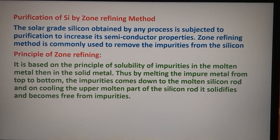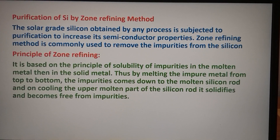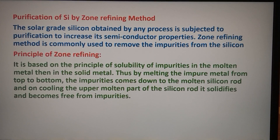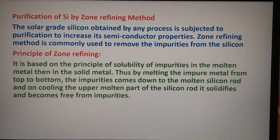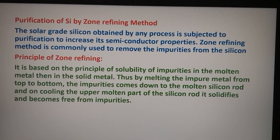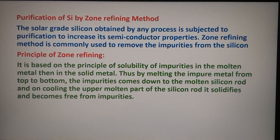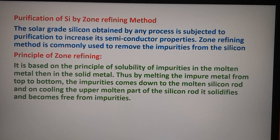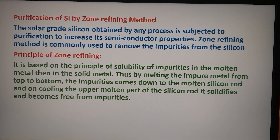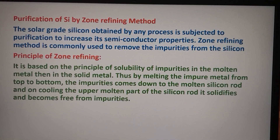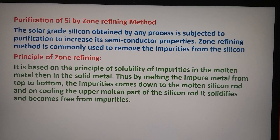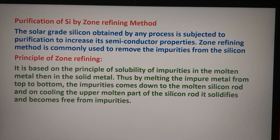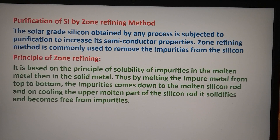The zone refining process is based on the principle of greater solubility of impurities in the molten metal than in the solid metal. When the silicon containing impurities is melted, the impurities move into the molten metal, leaving the solid metal above. We melt the metal using a heater. When we move the heater along the rod, by clamping it vertically, the impurities also move along with the heater. In this way, the silicon rod which solidifies becomes free from impurities.